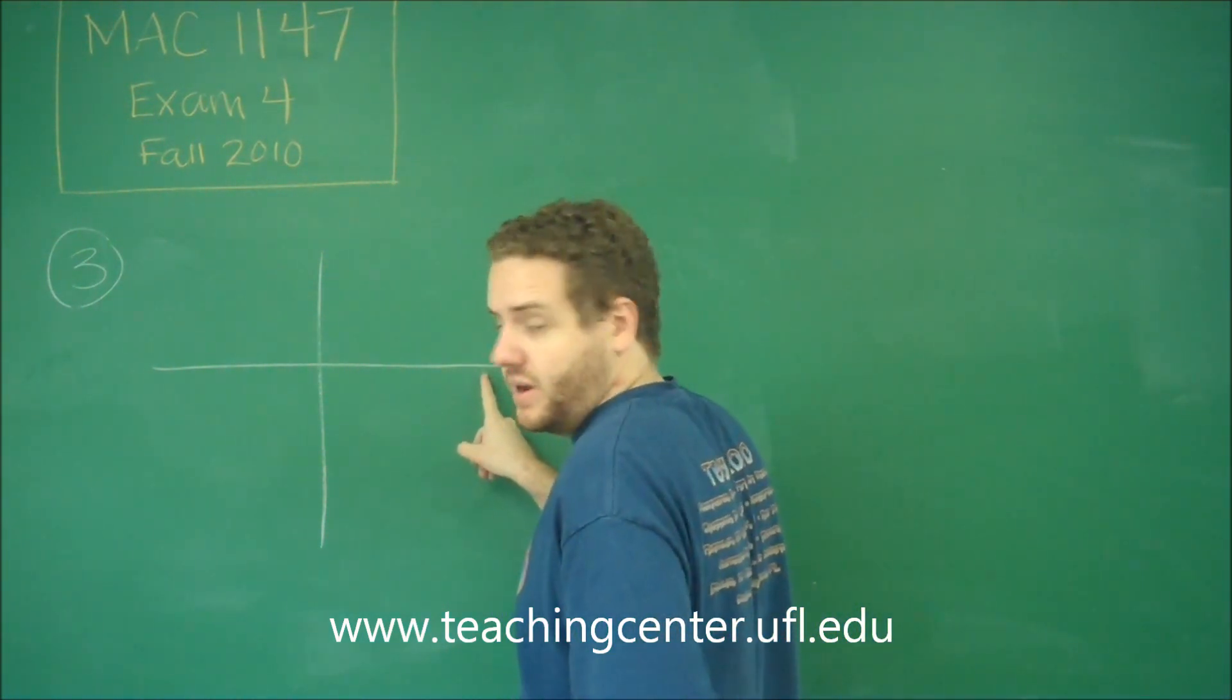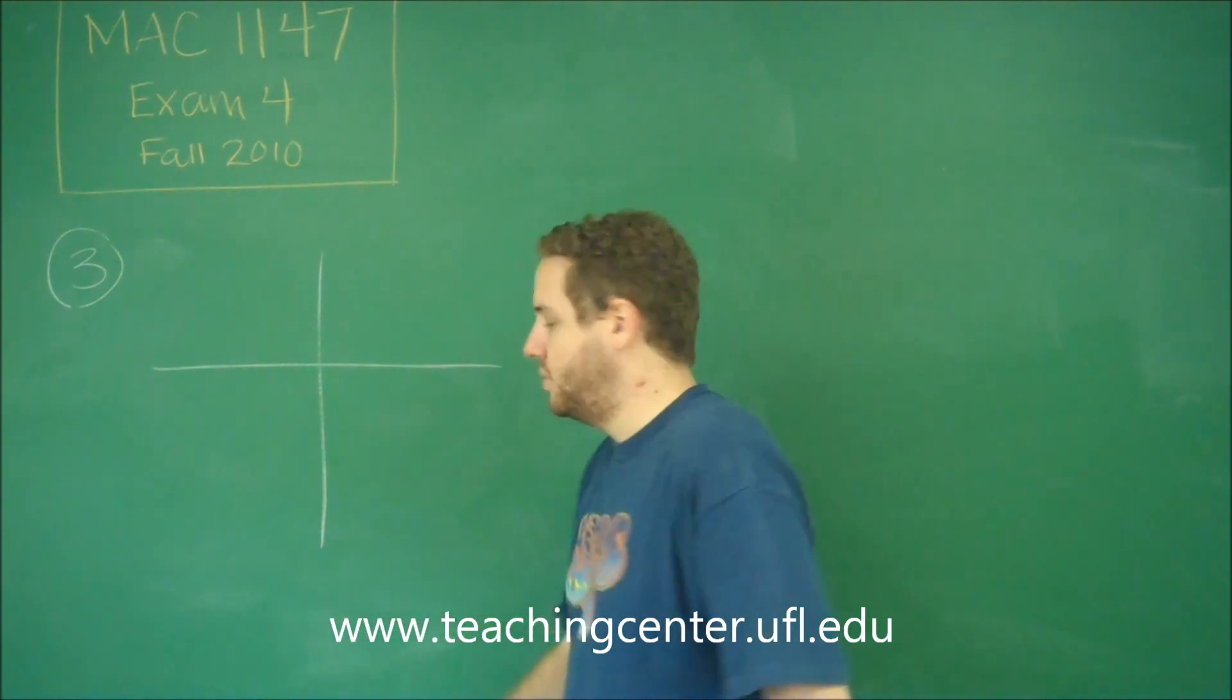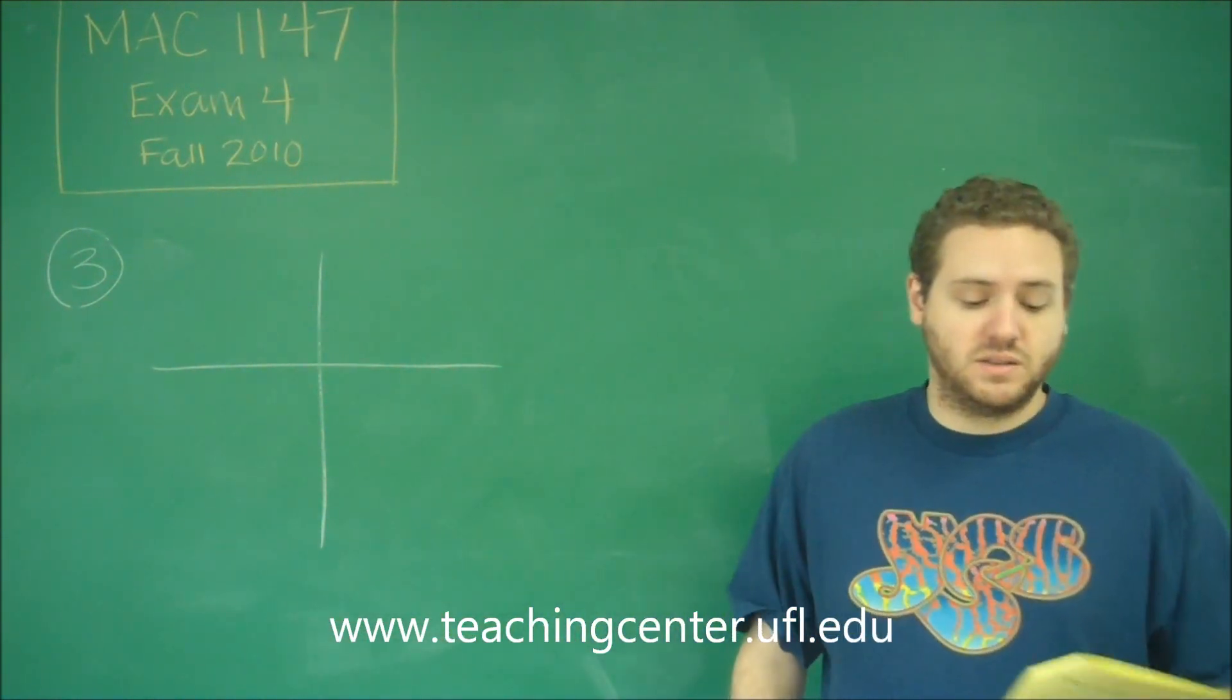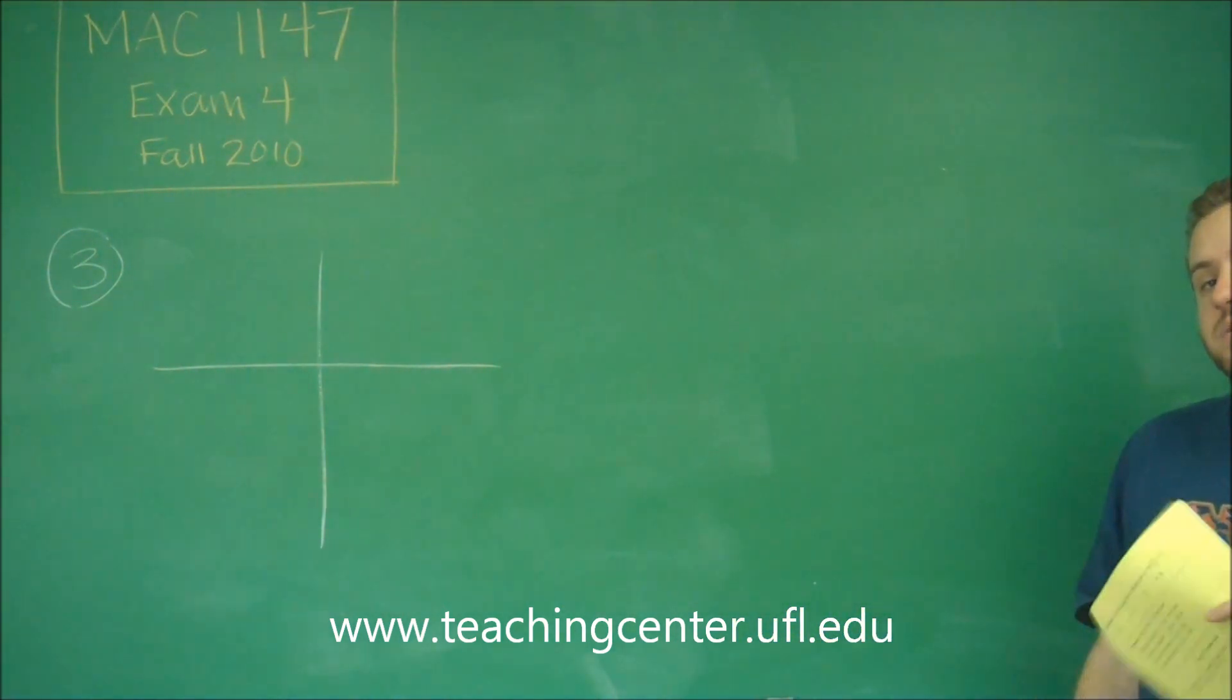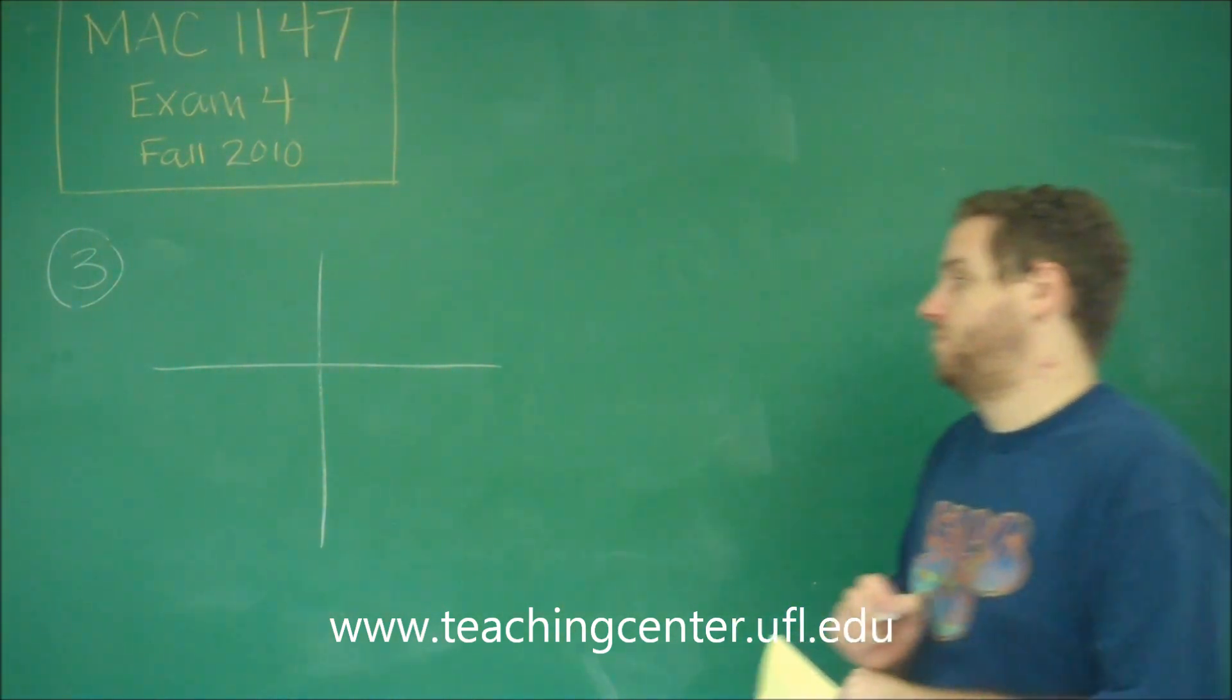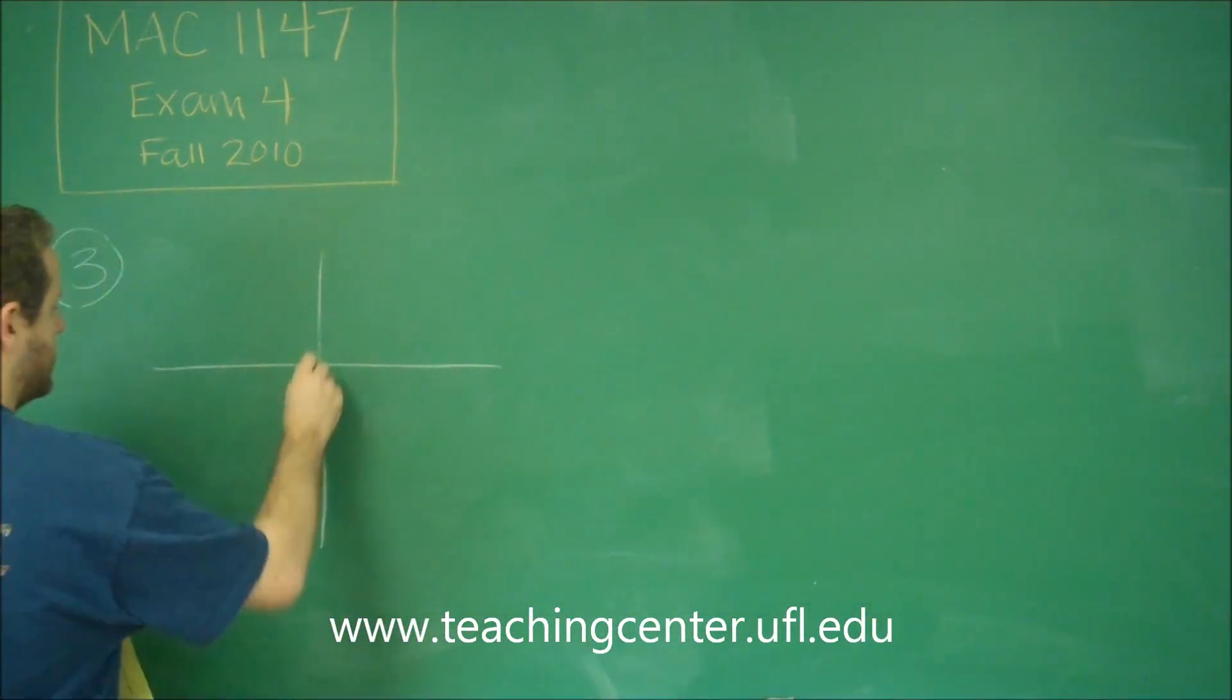If you're going in the negative direction, going to here would be pi over 2 units. So is 3 pi over 5 more or less than pi over 2? So 3 fifths is bigger than 1 half, so this is more. So this angle is going to be somewhere like this.